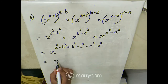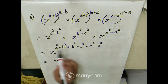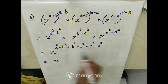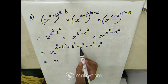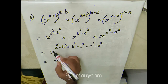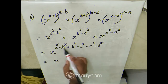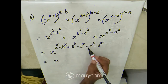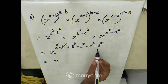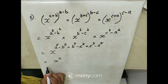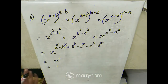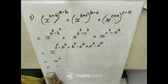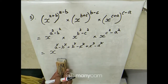Now we simplify the exponent: positive a² and negative a² cancel, negative b² and positive b² cancel, negative c² and positive c² cancel. We are left with x power 0, and anything raised to 0 is 1. So the entire expression simplifies to 1. Next problem is problem 6.